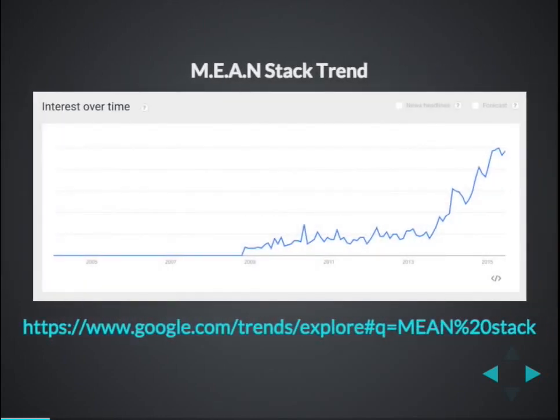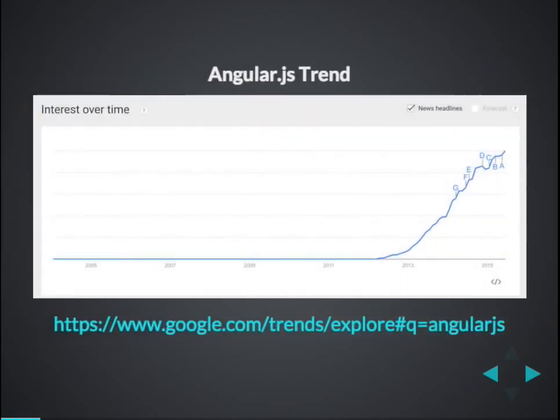Ironically, that inflection point has a strange correlation to technologies that embrace that change in the web — in particular, the MEAN stack. You'll notice the MEAN stack is hovering along until about a little after 2013, and then it just skyrockets. And if you look at AngularJS, right around 2013 it also shoots to the moon. In my opinion, what's happening here is a result of a change in the web.